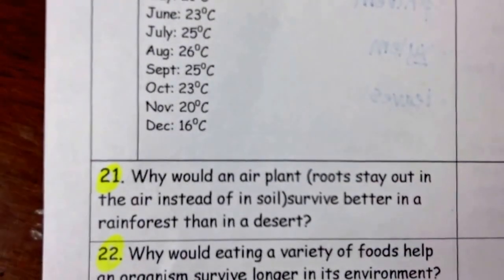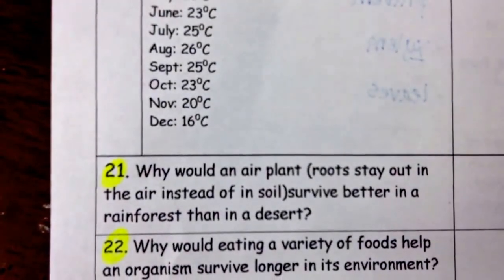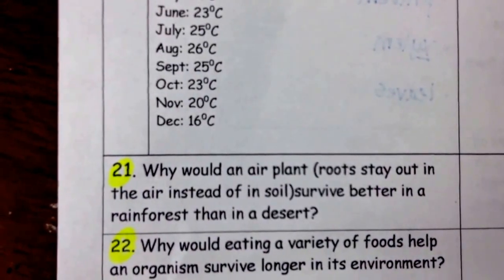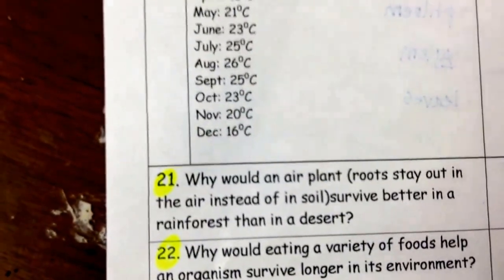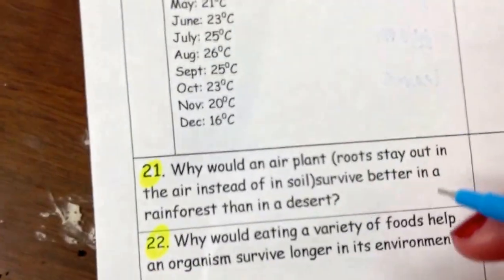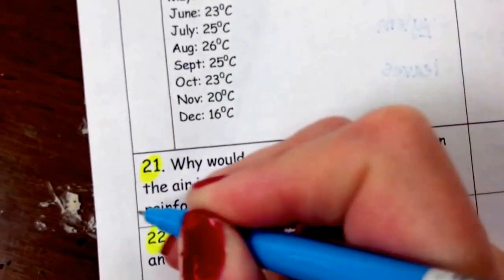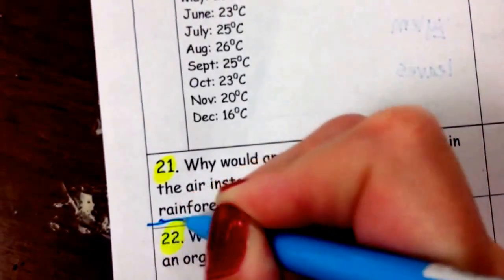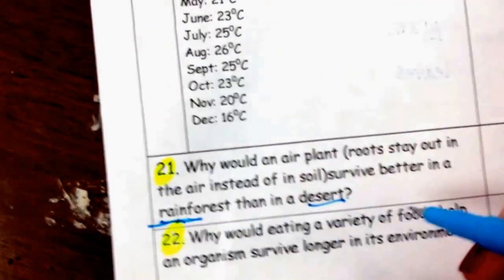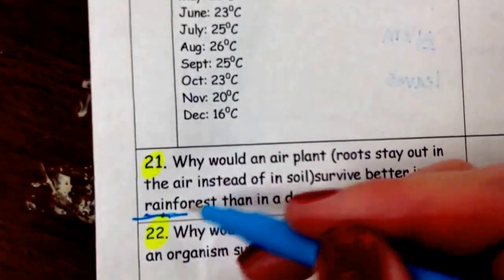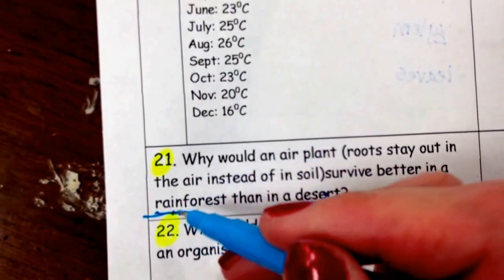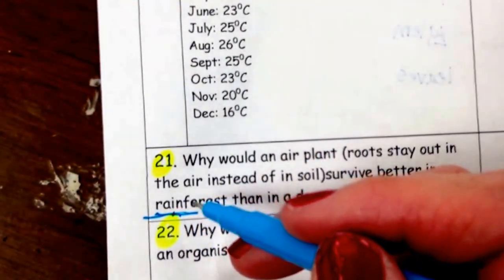And right here we had a question about why would an air plant, they have plants that roots stay out in the air instead of in soil, survive better in a rainforest than in a desert. Well, you know that the desert is very, very dry. And you're just now learning about the rainforest, but look, it has the word rain in it. What's the difference between a rainforest and a desert? Is that the desert is too dry, doesn't have enough rain to support it. So that's why an air plant can survive in a rainforest is because there's so much humidity in the air even.